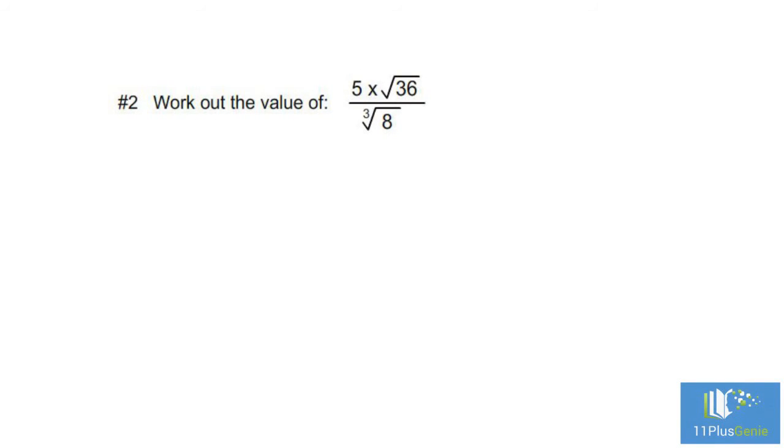Number 2: Work out the value of 5 times the square root of 36 divided by the cube root of 8. The square root of 36 is 6 and the cube root of 8 is 2. If we then simplify, we have 5 times 6 divided by 2 which equals 15.